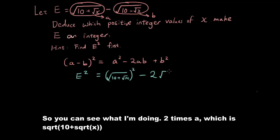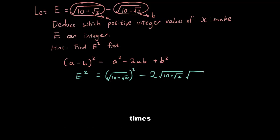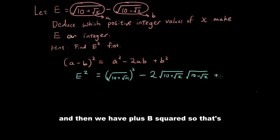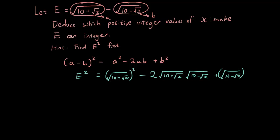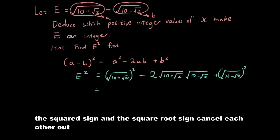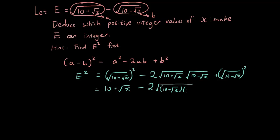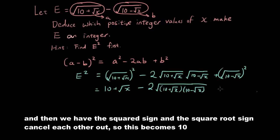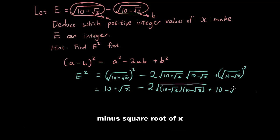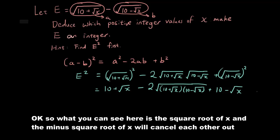...2 times a, which is (10 + √x), times (10 − √x), then plus b squared. That's (10 − √x) squared. The squared sign and the square root sign cancel each other out, so we have 10 + √x, minus 2√[(10 + √x)(10 − √x)], and the squared and square root cancel again on the last term giving 10 − √x.